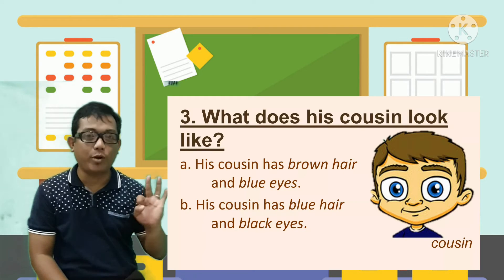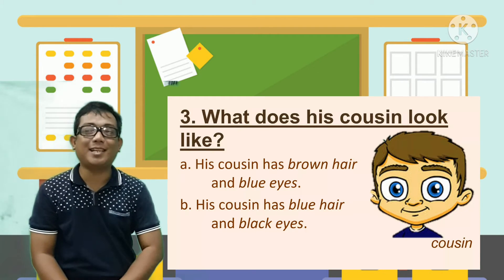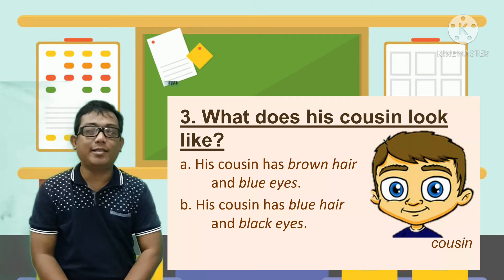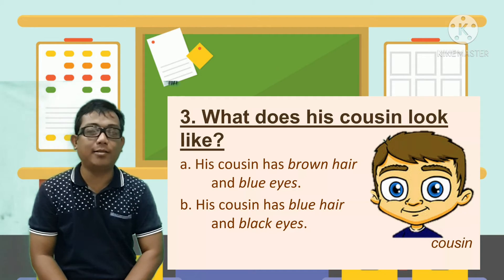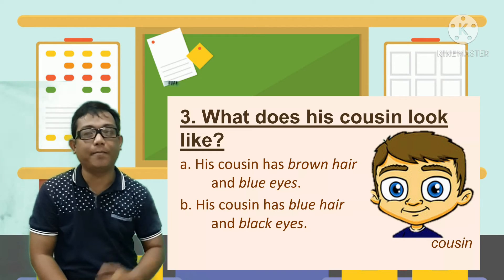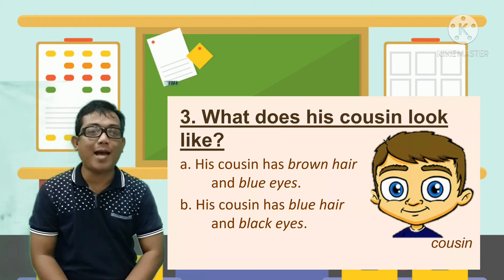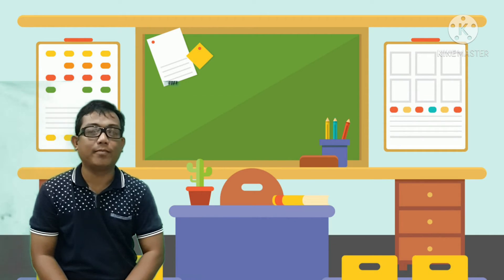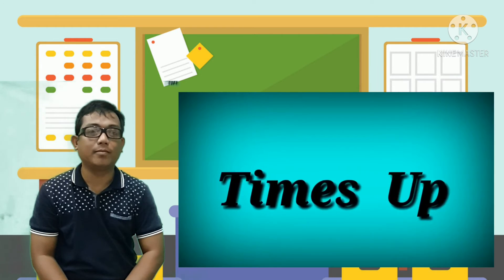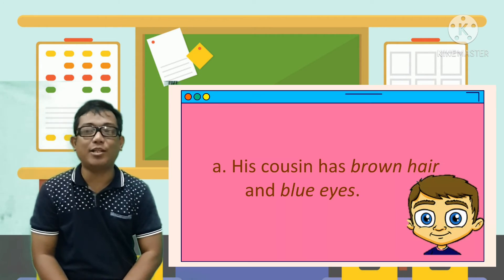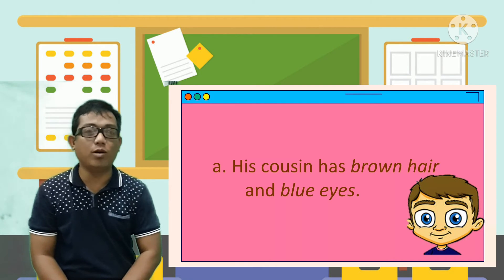Number 3. What does his cousin look like? A. His cousin has brown hair and blue eyes. B. His cousin has blue hair and black eyes. The correct answer is Letter A. His cousin has brown hair and blue eyes.